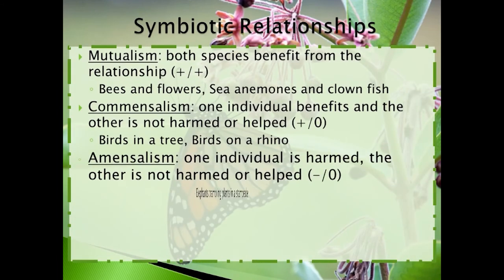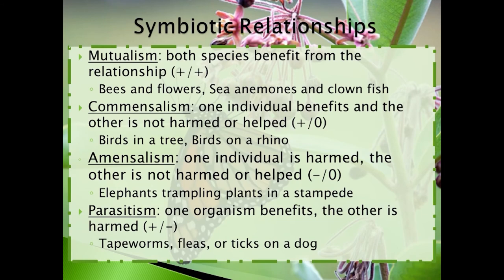There are four different types of symbiotic relationships that differ based on the effect on the species involved. The first is mutualism, which occurs when both species interacting benefit from the relationship. Bees and flowers are a good example — bees benefit by gaining access to nectar as a food source, and flowers benefit because bees carry pollen useful in fertilization. Both species benefit and are dependent on one another. In commensalism, one individual benefits from the relationship and there is no effect on the other. Birds in a tree are an example — birds benefit by building a nest and gaining shelter safe from predators, but there is no effect on the tree.